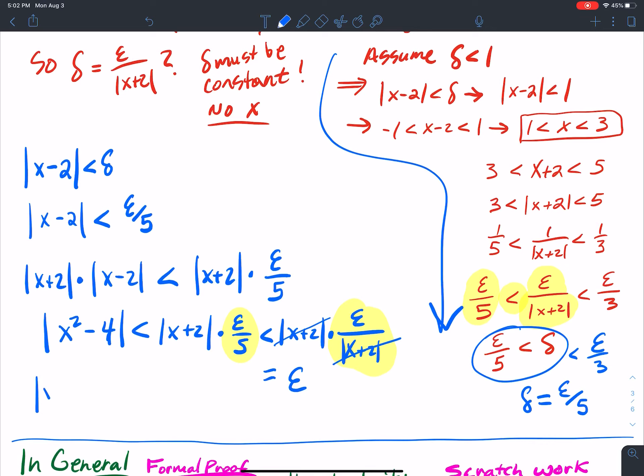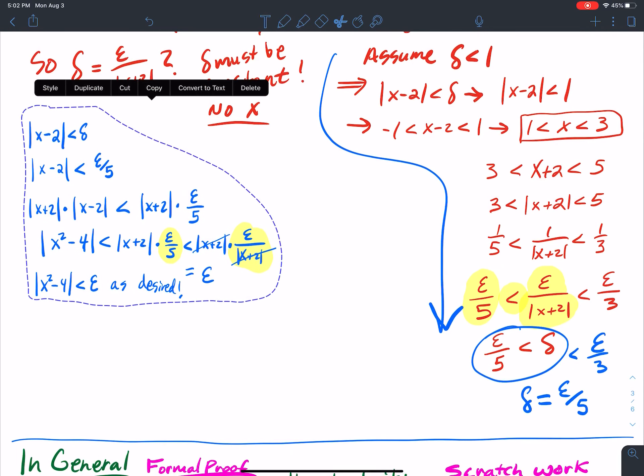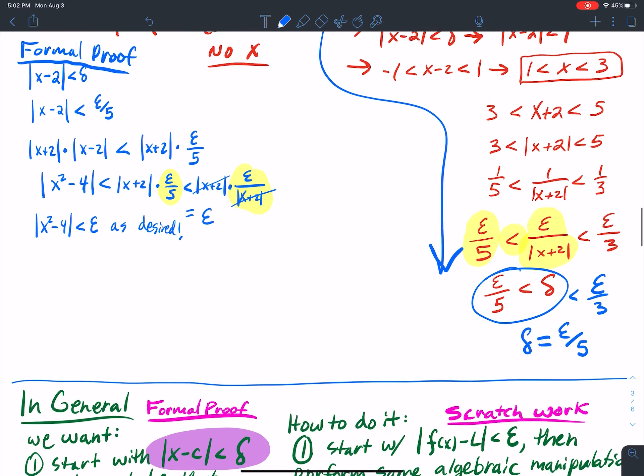and so this just gets me equal to epsilon. Therefore, I have x squared minus 4 is less than epsilon as desired. And so that was the game plan. And then, after you get this part of the formal proof, so I'm doing the formal in blue. So that's the formal proof there.